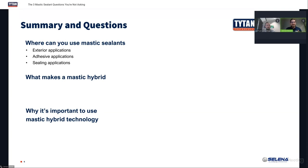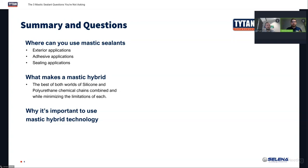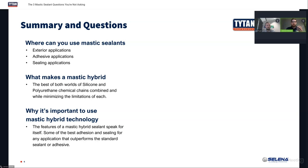What makes a mastic hybrid? It's the combination — the best of both worlds — of silicone and polyurethane put together, making one product that takes the best properties of those two combined. Why is it important? You saw the features and all the benefits a mastic hybrid technology has against silicone alone, acrylic, or just polyurethane. This hybrid technology really outperforms all of them because it takes the best properties of silicone and polyurethane.